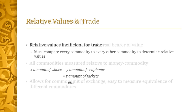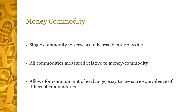We need something that Marx calls the money commodity — a single commodity that serves as a universal bearer of value, something that all other commodities can be converted to. The exchange value of all commodities can be related to the money commodity, so it's a common unit of exchange that mediates between any two commodities. Rather than being expressed in thousands of relative values, everything is expressed in one relative value of the money commodity itself.